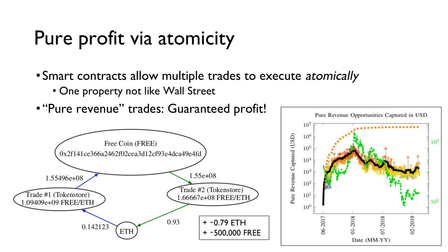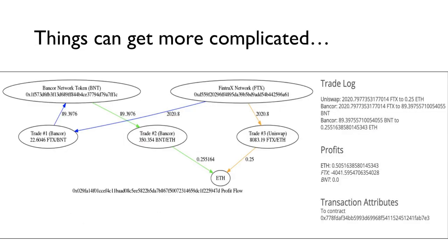On the right, we show some measurements of this pure revenue marketplace over time in 2018 and 2019, showing a sustained availability of pure revenue opportunities of about $10,000 US dollars per day — a conservative lower bound that we measured. These atomic transactions are not just limited to two-DEX trades. Oftentimes, these arbitrage bots compose multiple, sometimes up to even five or six, DEX trades into a single transaction and execute them atomically, profiting in every single traded asset.